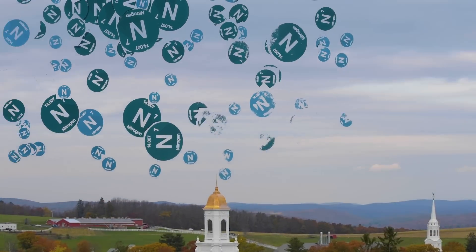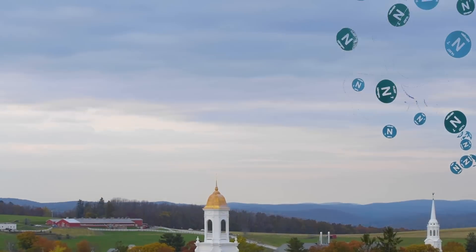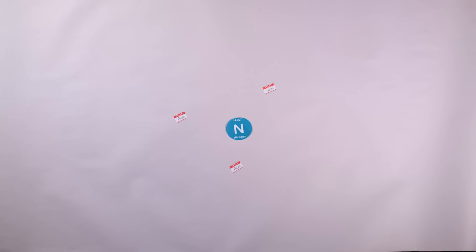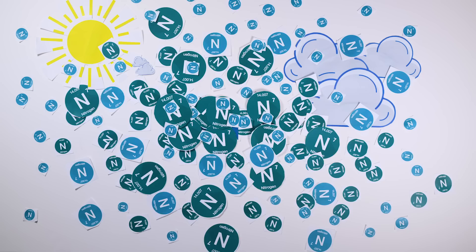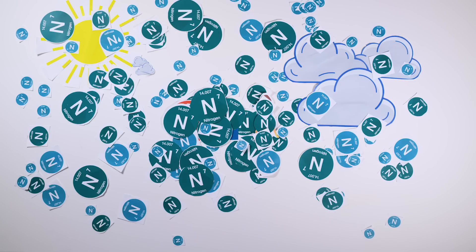But we do know about nitrogen. It makes up 70% of the air we breathe. Nitrogen is small. It can only bond with up to three other atoms at a time. And it prefers to bond to itself, which is how it's found in the air and in Yukon.